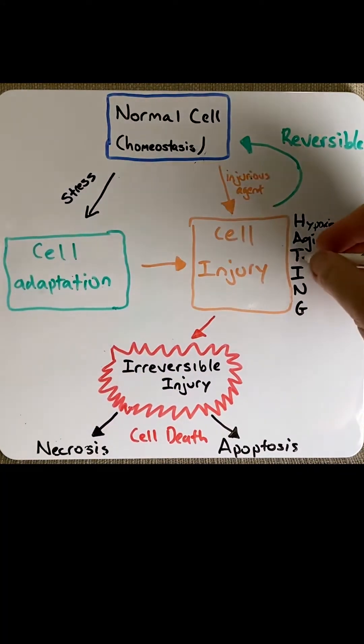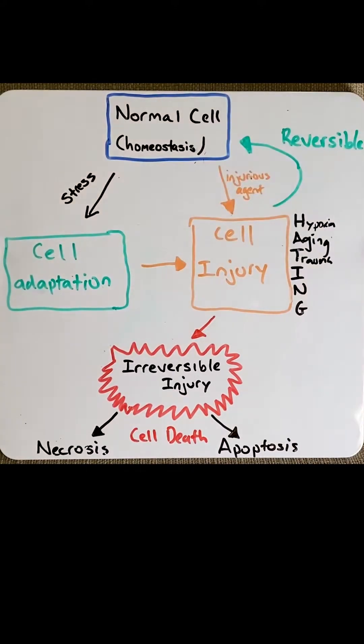T would be trauma or toxins. Some examples would be physical trauma, burns, or exposure to chemicals like alcohol.